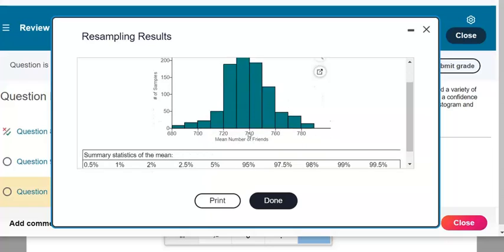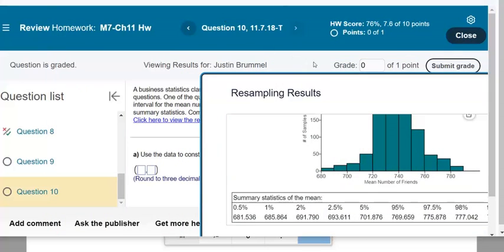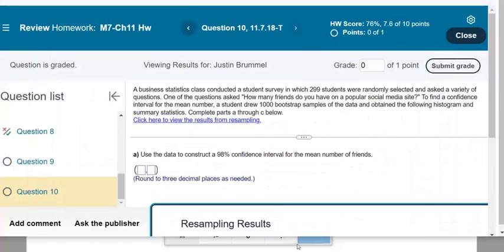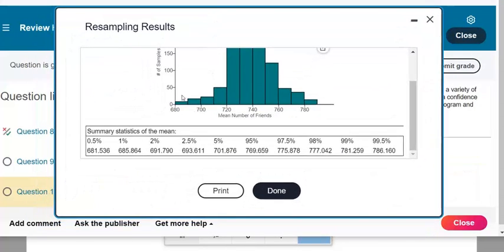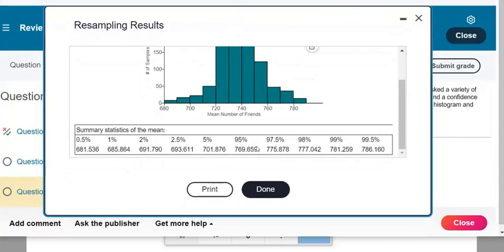Click for the results. Okay, there's the histogram. What are they asking us to do? 98% confidence interval for the mean number of friends. And so they don't even give us the data set, so we can't even run the numbers ourselves. We have to rely on this information here.